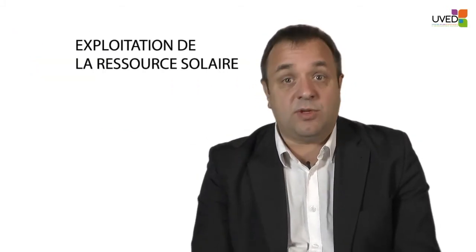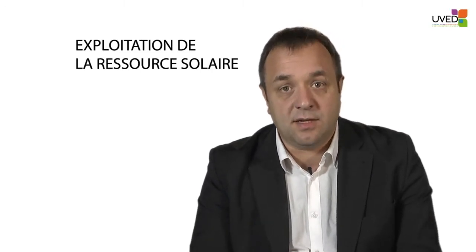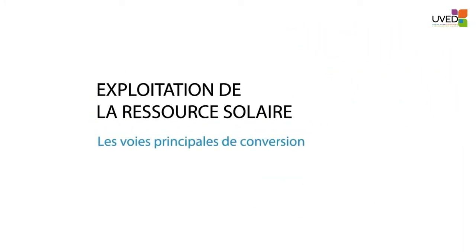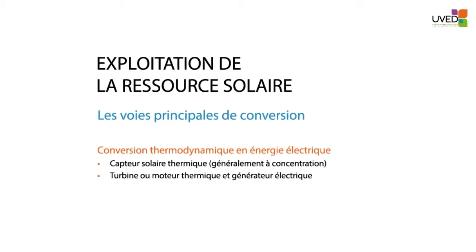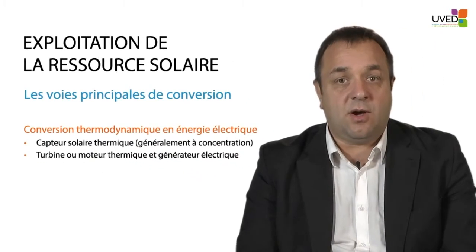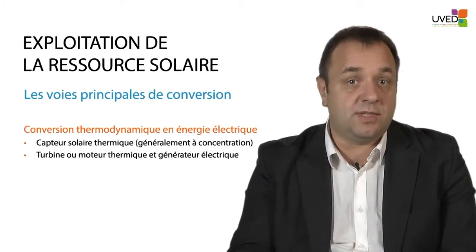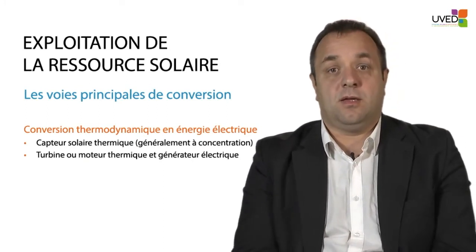There is another conversion option, more interesting and not so well known: thermodynamic conversion, to turn the energy into thermodynamic energy and then into electrical energy. There are two stages. The first stage is a thermal type of conversion with specific collectors that concentrate the light radiation. Power is increased on the collector, and this solar-to-thermal energy conversion is then followed by a second stage where thermal energy is converted into electrical power with turbines or Stirling engines.